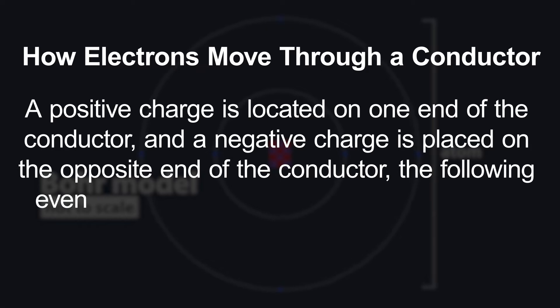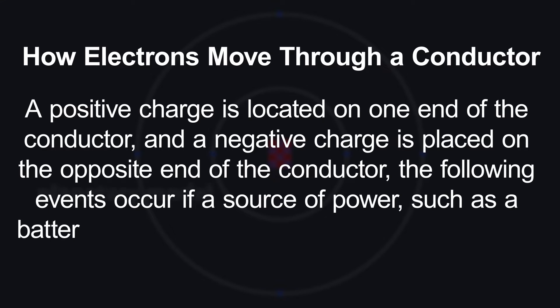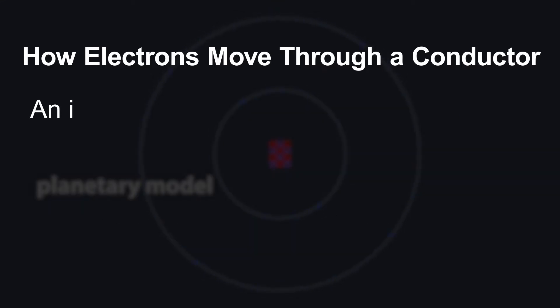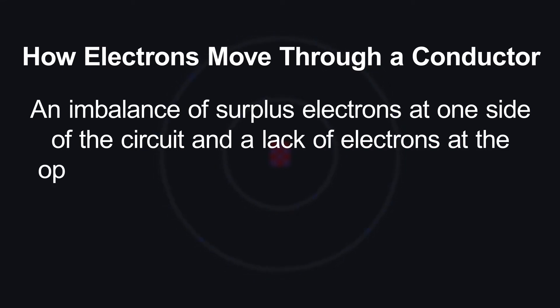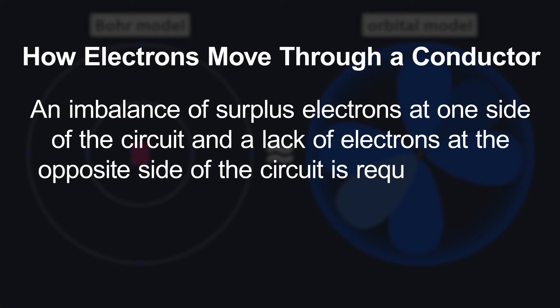The following event occurs if a source of power such as a battery is connected to the end of the conductors. An imbalance of surplus electrons at one side of the circuit and a lack of electrons at the opposite side of the circuit is required for the flow of current.